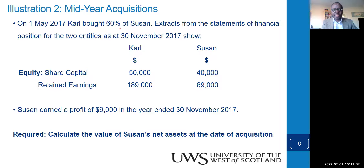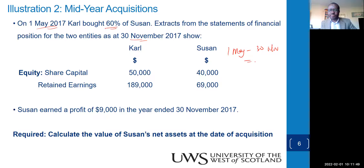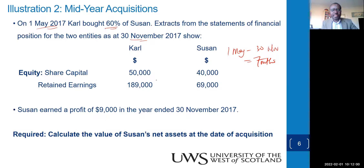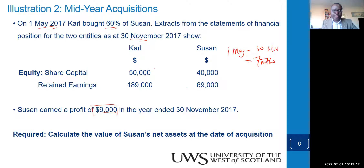Second example: on 1st May, Car bought 60% of Susan. Extract from financial statements at 30th November. From 1st May to 30th November — May, June, July, August, September, October, November — is again seven months. The share capital and retained earnings are as shown, and Susan earned a profit of 9,000 in the whole year.